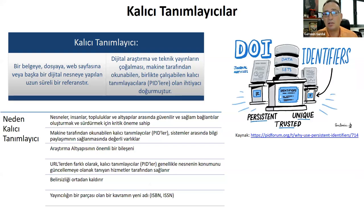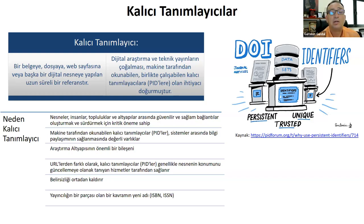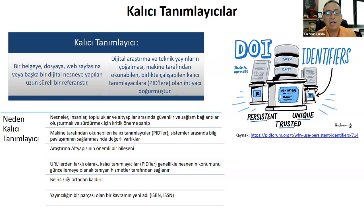Kalıcı tanımlayıcılar nedir, ne işe yararlar, neden ihtiyacımız var? Aslında kalıcı tanımlayıcılar, tıpkı insanlar için TC kimlik numarası gibi düşünülebilir. Her bir kişi için bu numara özelse ve bu numaranın karşılığında o kişiyi bulmak çok kolay oluyorsa, kalıcı tanımlayıcıları da aynı şekilde değerlendirebiliriz. Bunlar hem kişileri hem kurumları hem de bilgi kaynaklarını kolayca bulmamızı sağlayan benzersiz numaralardır.